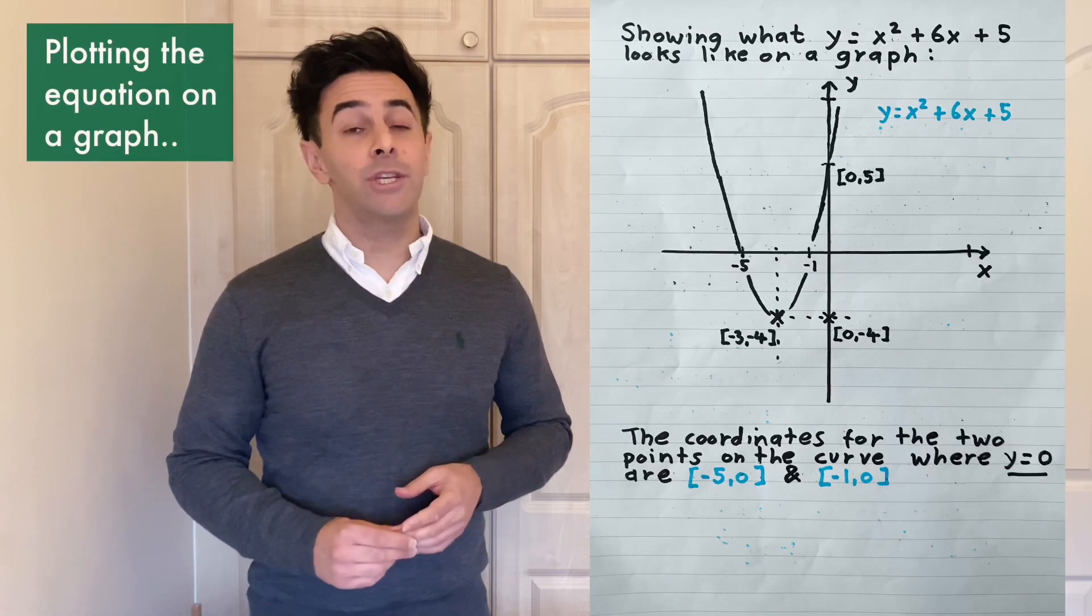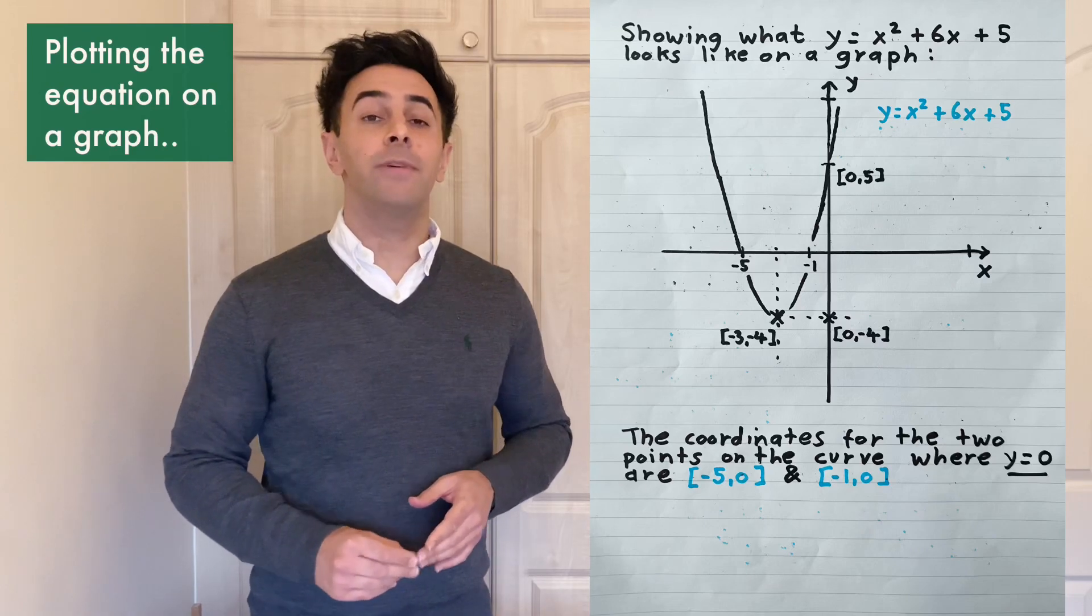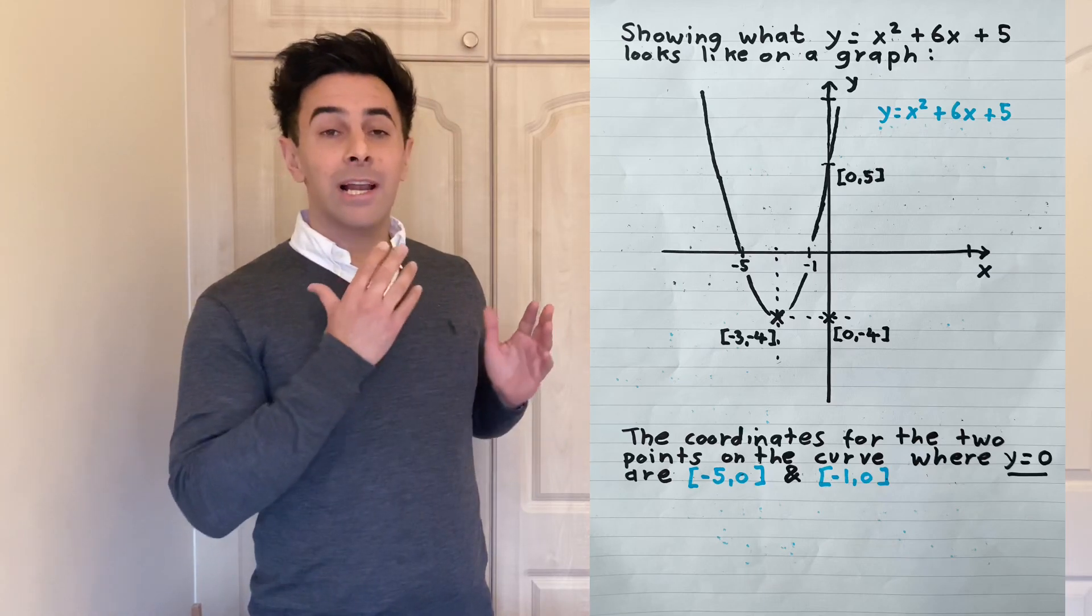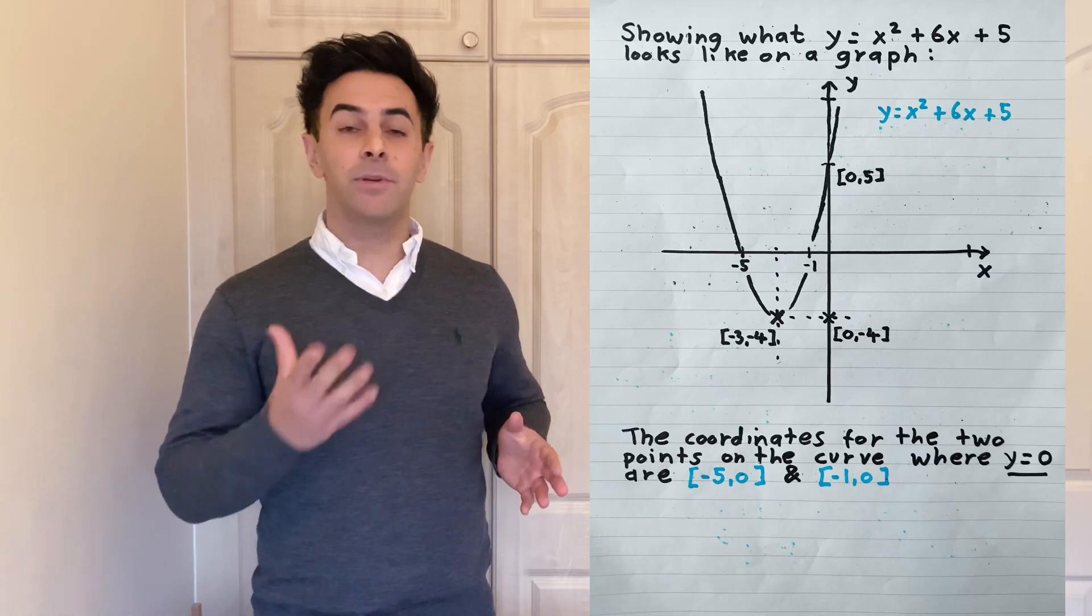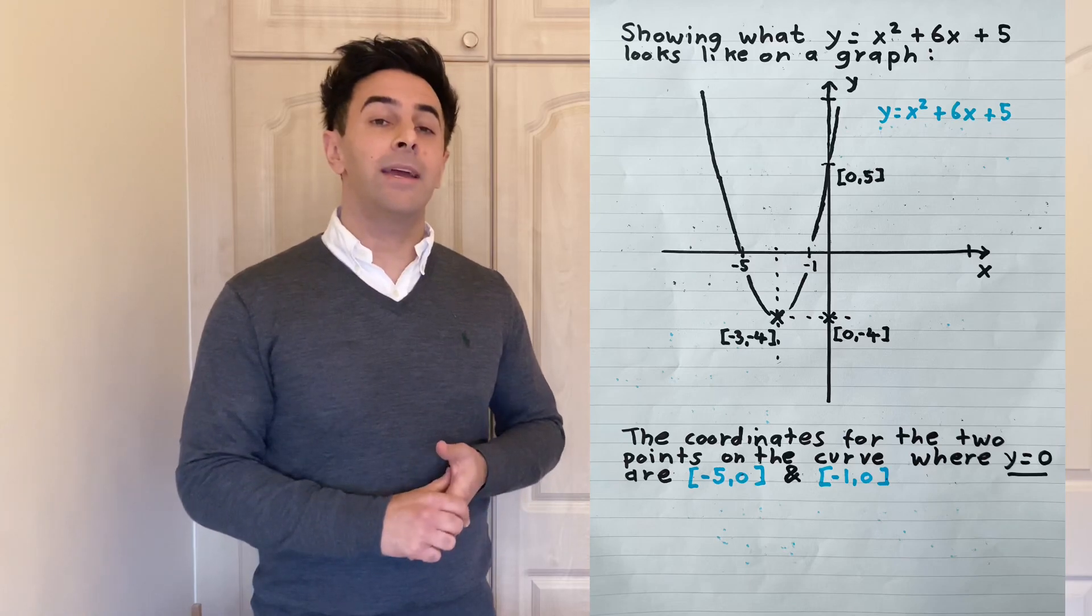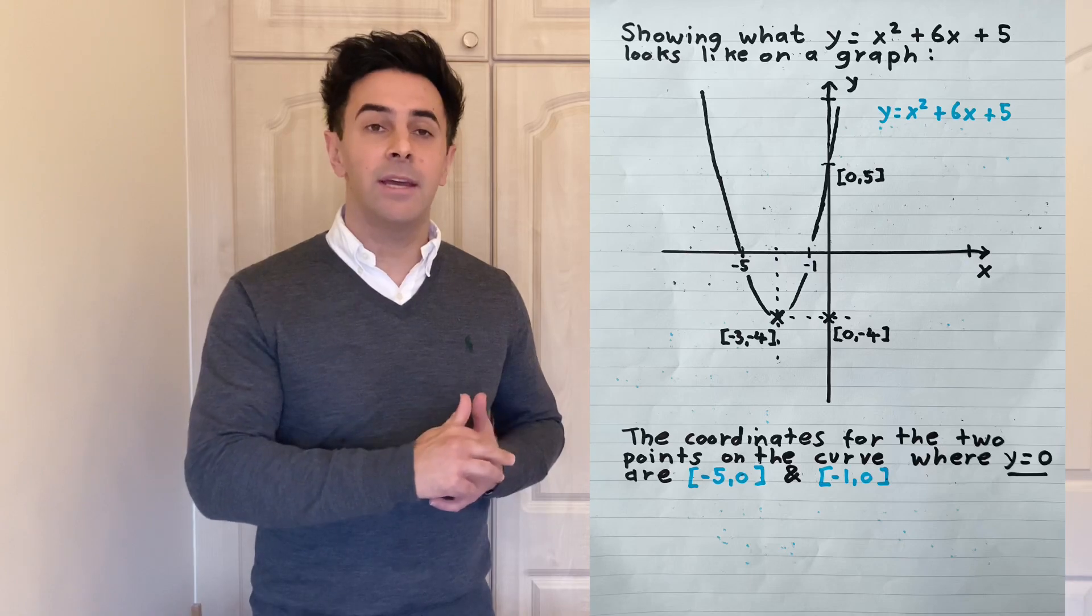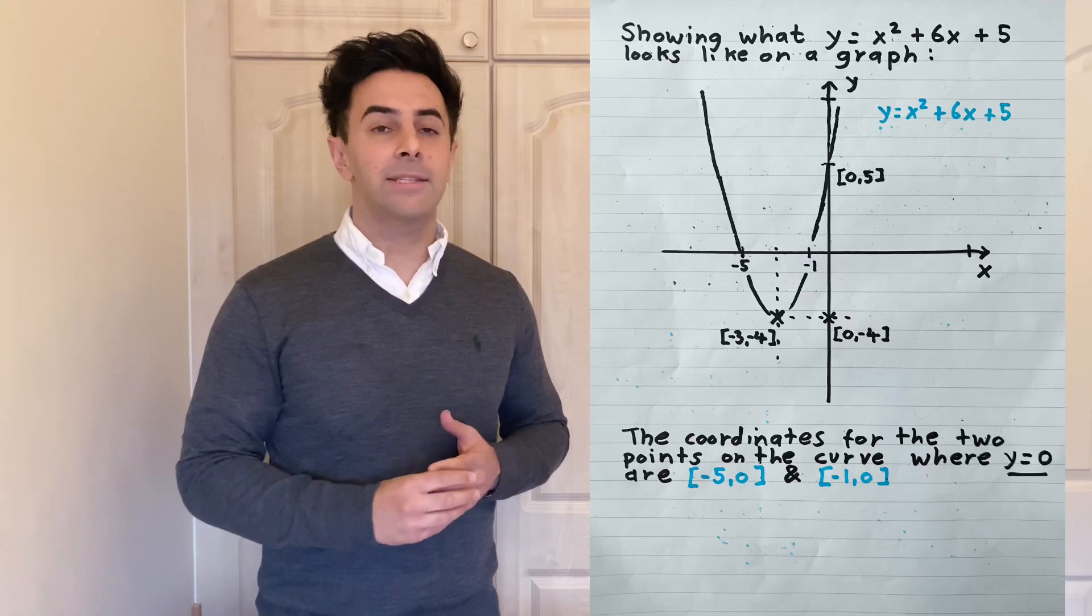Now what we'd like to do is show you what this function of x squared plus 6x plus 5 looks like plotted on a graph. We get your classic parabola, which is very typical of a function with an x squared term. It's a symmetrical curve and we've even shown you the points of intersection here on the y and the x axis.